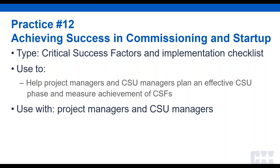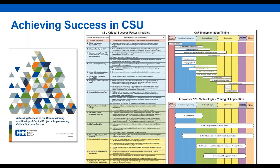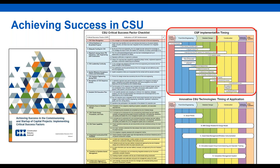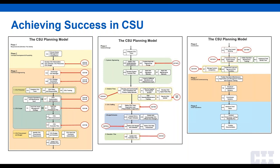The last practice is Achieving Success in Commissioning and Startup, related to the planning for startup model. This tool identified 16 critical success factors and 45 indicators of whether those CSFs have been achieved. Like the planning for startup model, these are significantly front-loaded — by the end of detailed design, 13 of the 16 CSFs should have been started and 9 should already have been achieved. This team did a great job connecting this practice to the planning for startup process, mapping the 16 critical success factors to that process — so the two practices work extremely well together.